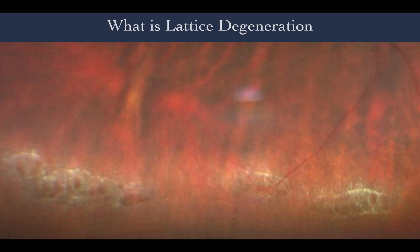Hello folks. In this video we're going to talk about lattice degeneration. This channel is focused on medical education for ophthalmologists and ophthalmologists in training. Lattice degeneration is a type of peripheral retina degeneration — it is a thinning of the retina that happens over time.